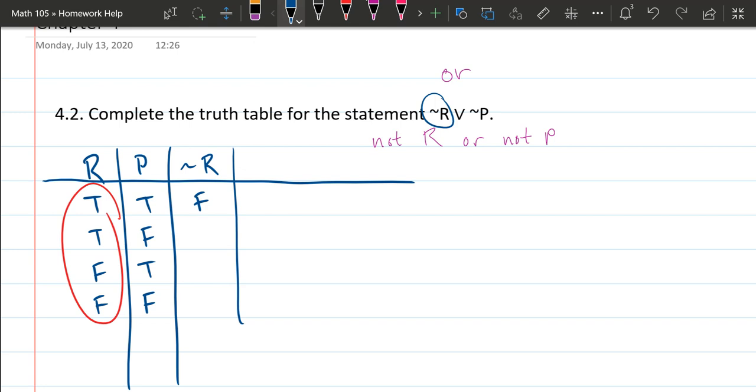So NOT TRUE is FALSE. The second TRUE, NOT TRUE, would be FALSE. This FALSE, the opposite will be TRUE. And this FALSE, the opposite will be TRUE. We're done with the NOT R column.